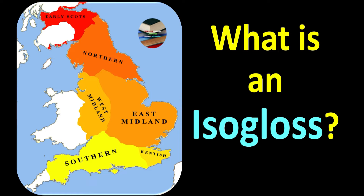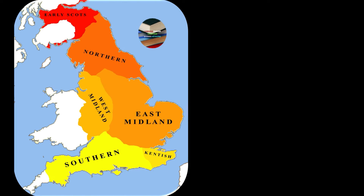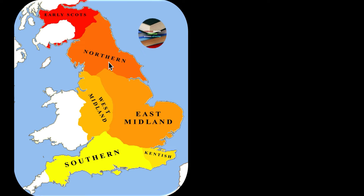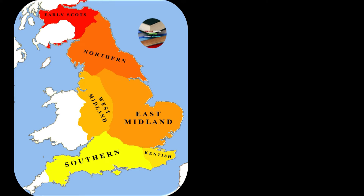Hello and welcome to another new linguistic concept. What is an isogloss? Let's talk about it. First, let's have a look at this linguistic map of England. You can see how this map is divided into different areas where different types of dialects are spoken: southern dialect, Kentish dialect, east midland dialect, west midland dialect, northern dialect, and earlier Scots.